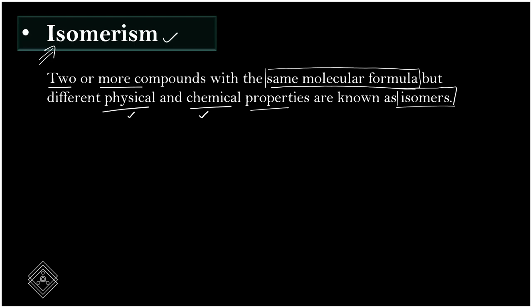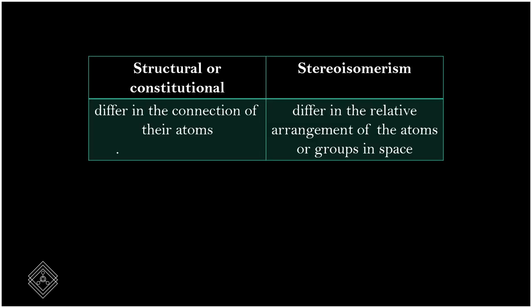The molecular formula is the same, but the physical and chemical properties differ. Isomerism is majorly classified into two categories: structural isomerism and stereoisomerism.